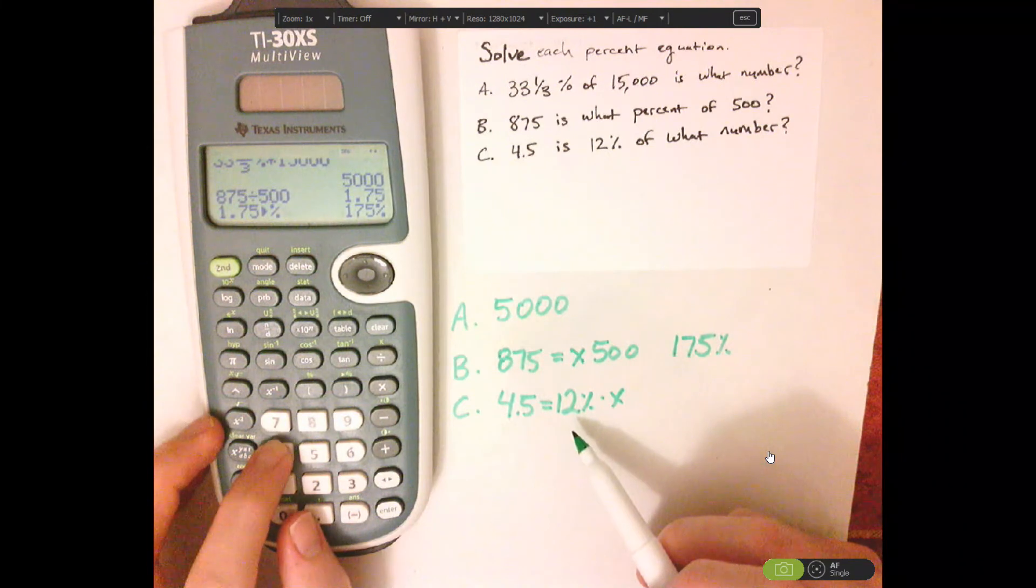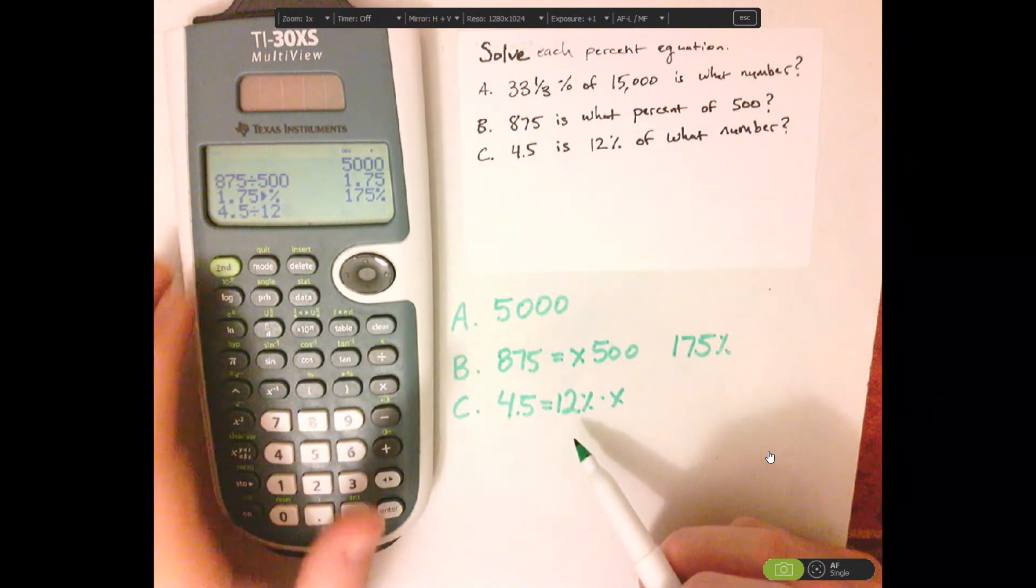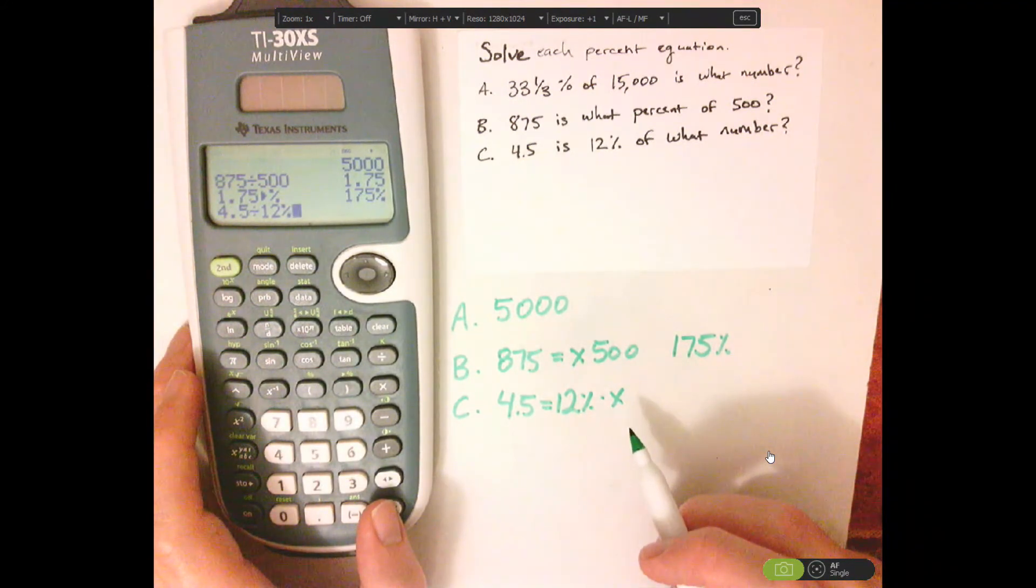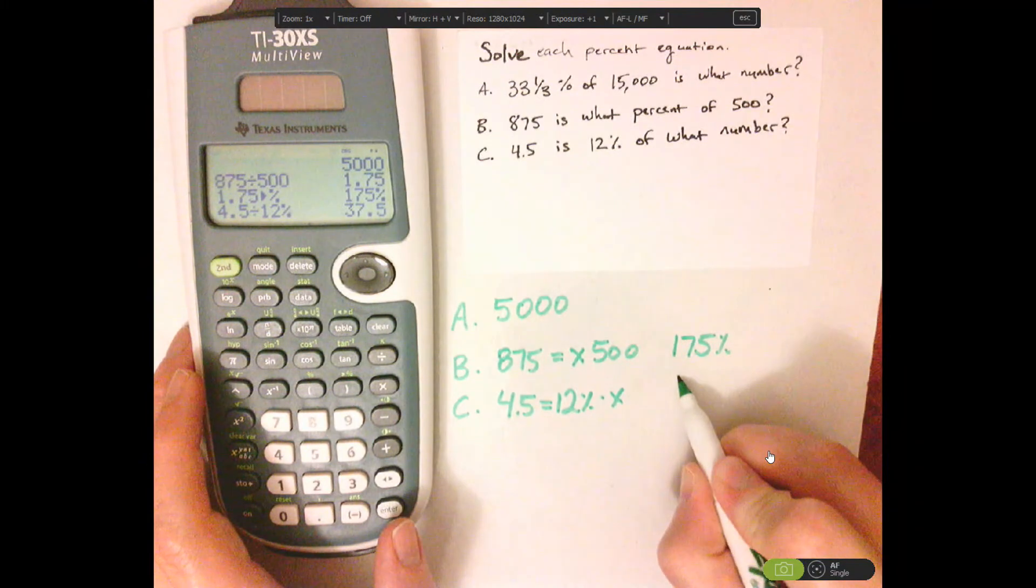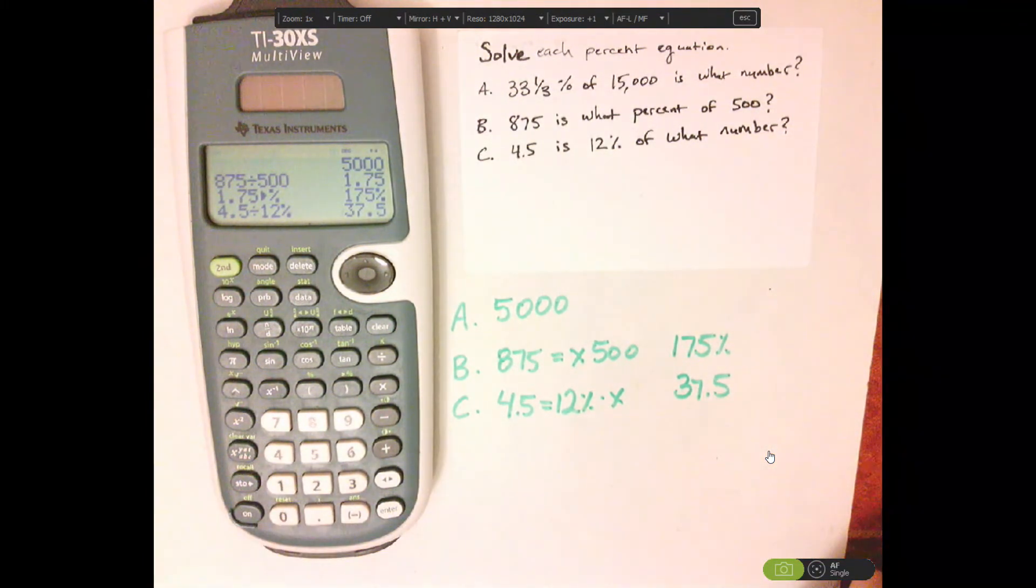So we're going to do 4.5 divided by 12 percent, and that gives us 37.5. That's it.